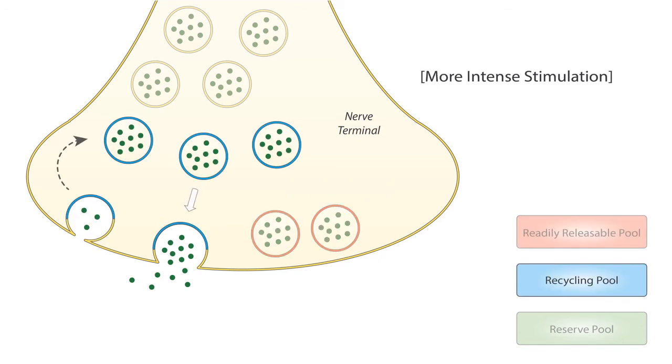So the second pool is the recycling pool, which is a subset of vesicles that maintain neurotransmitter release under moderate and more prolonged stimulation. This pool is made up of vesicles that are not initially docked, but then fuse with the membrane under more intense stimulation